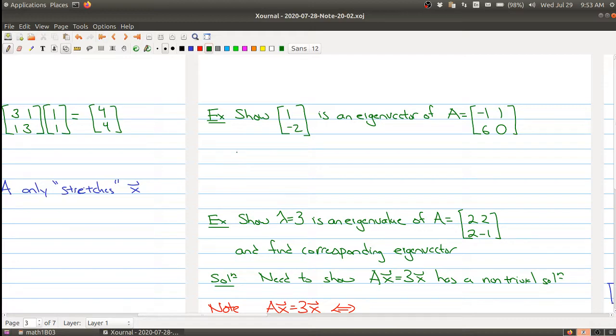I just look at the matrix that I'm starting with studying. I'm going to multiply it by the vector that I want to check to see is an eigenvector. So I just do the matrix multiplication by the vector.